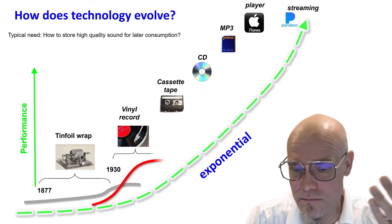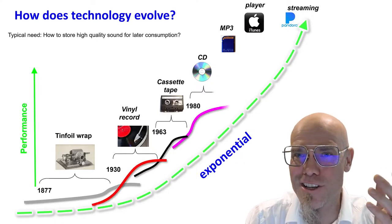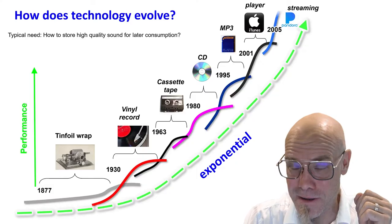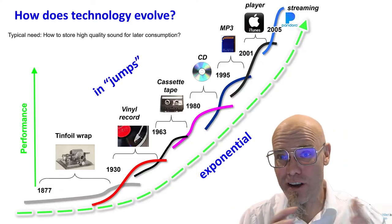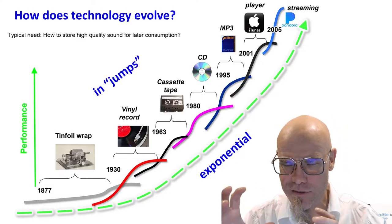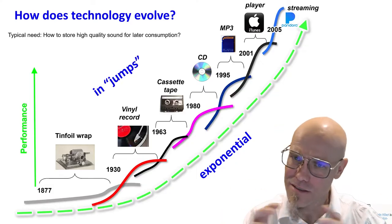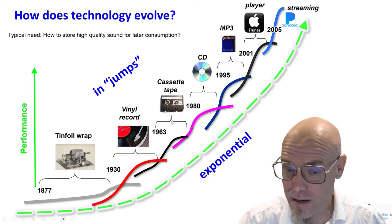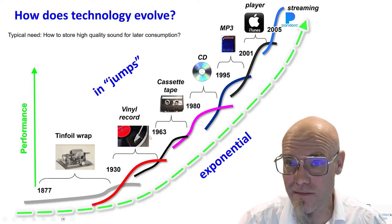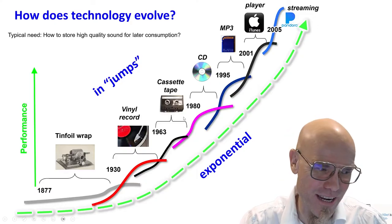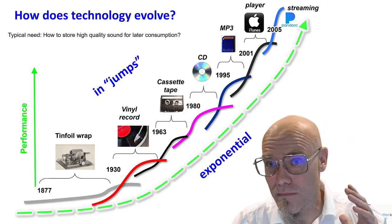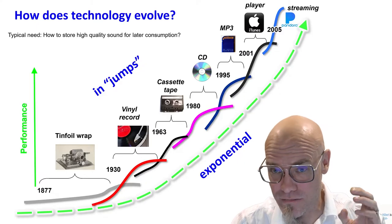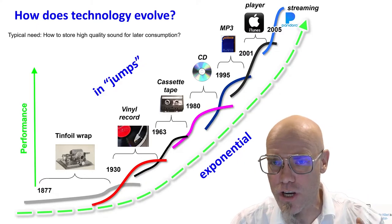Technology also evolves in jumps. In biology, we call this punctuated equilibriums — there's a dog and a wolf, and in between there's a gray zone, but either it's a dog or it's a wolf. Similarly, in technology, either it's a wire recorder or it's a tape. We will go much deeper into technological innovation cycles and technological change. It's important to understand that, so we don't have to be so anxious about it. Artificial intelligence follows the same logic and so do other new technologies.